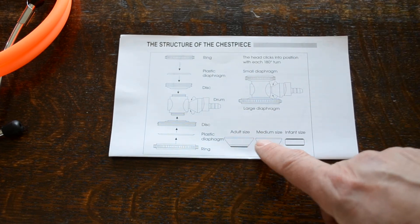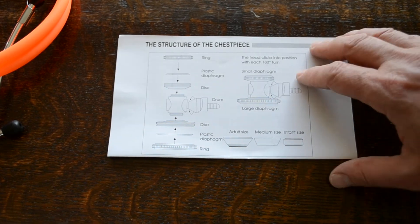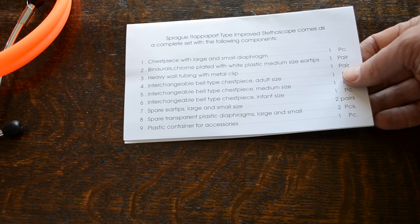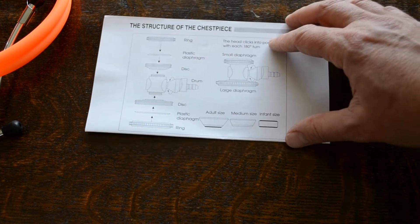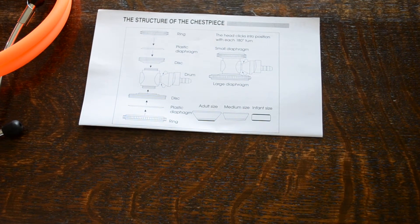As I say, we've got adult size, medium size or pediatric and infant size or neonate size options all included in that spares pack. And that just basically lists through the basic settings and shows you how to set those different settings up if you do choose to have a bell or a diaphragm option as opposed to two diaphragms.